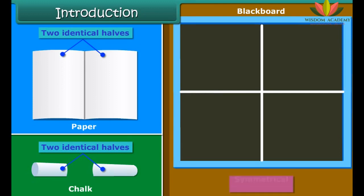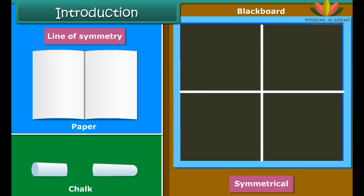These objects are called symmetrical and the line along which the object is folded is called the line of symmetry. Today let us learn more about symmetry.